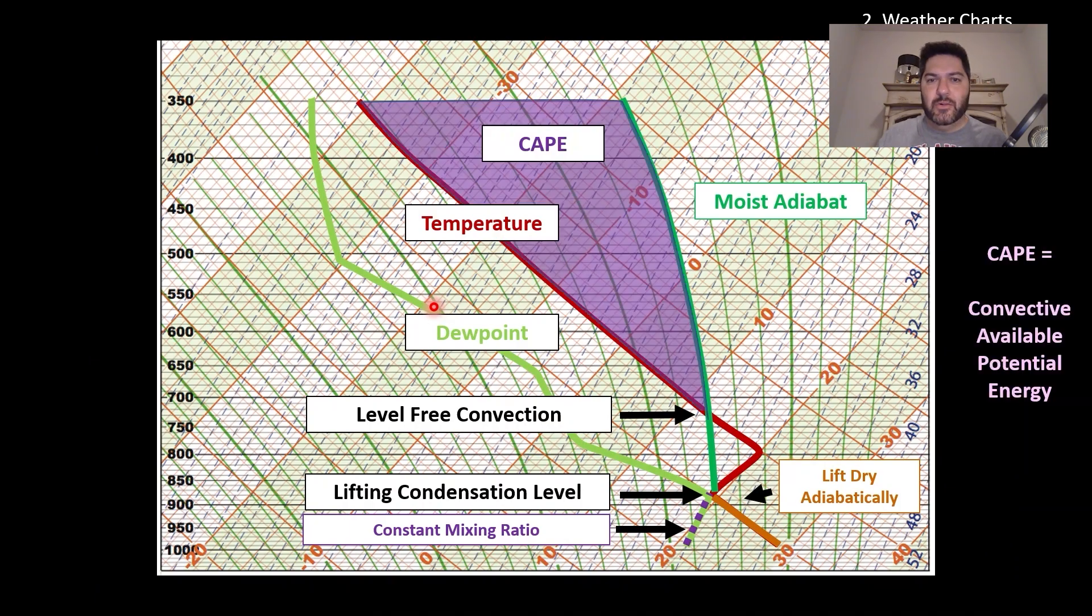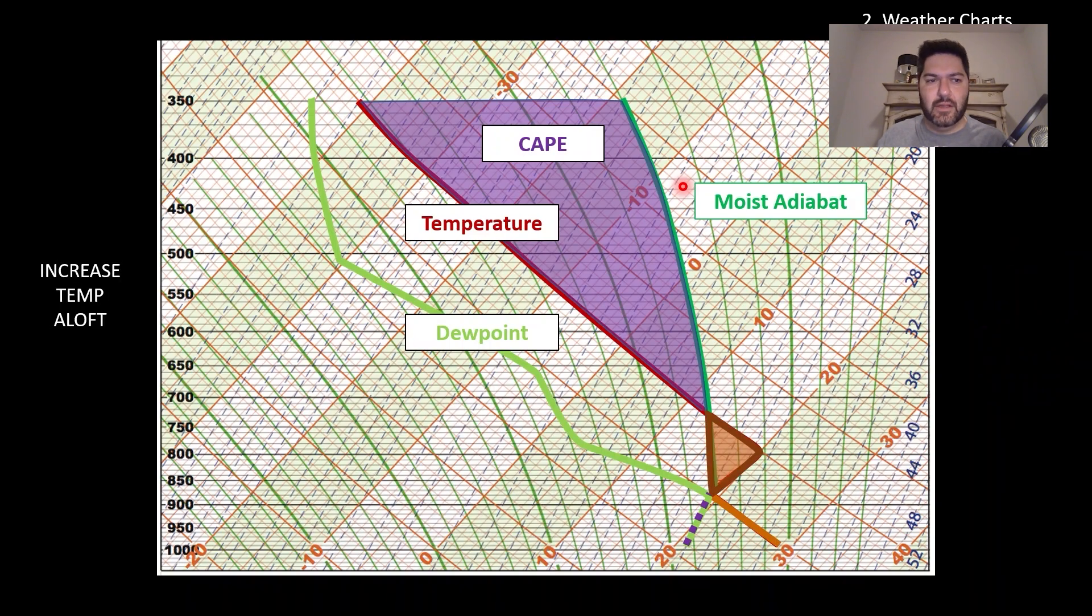And then it turns out that the area that is between the parcel temperature or the moist adiabat here and the environmental temperature, that area in between is known as your convective available potential energy. And that just basically shows you the potential for updrafts within a given thunderstorm environment. Again, your parcel temperature here is to the right of your environmental temperature, meaning that your hot air balloon is warmer than the environment. And so it will continue to rise. There's potential energy.